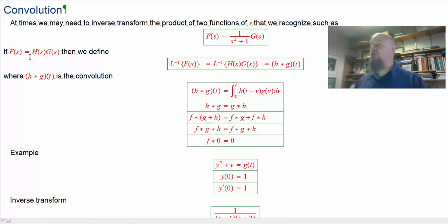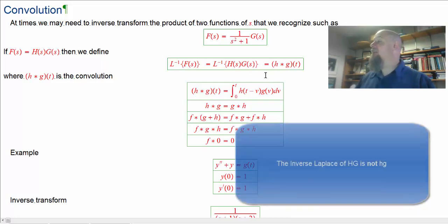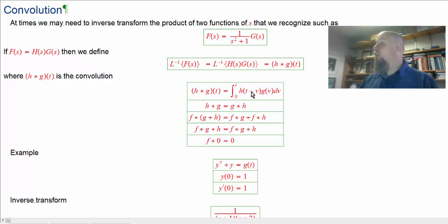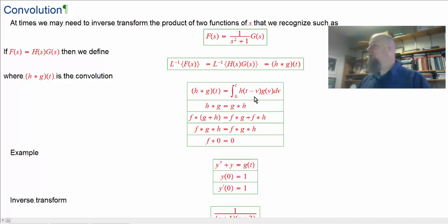If I've got F of s, which is the product of H times G in the Laplace world, and I take the inverse Laplace of that product, it's not little h times little g — it's little h convoluted with little g. So h convoluted with g is a function of t. We define convolution as: h convoluted with g equals the integral from 0 to t of h(t minus v) times g(v) dv. You integrate out the v and end up with a function of t.